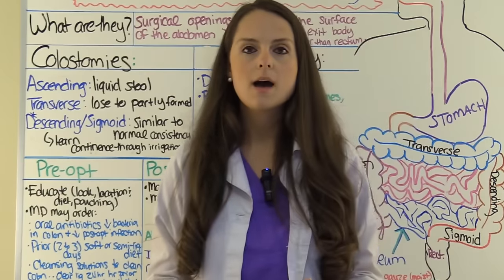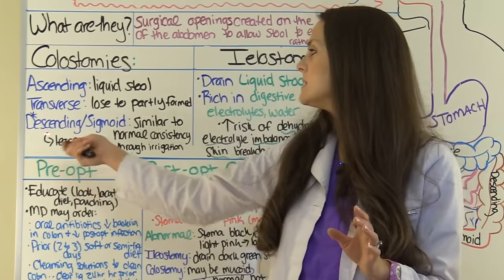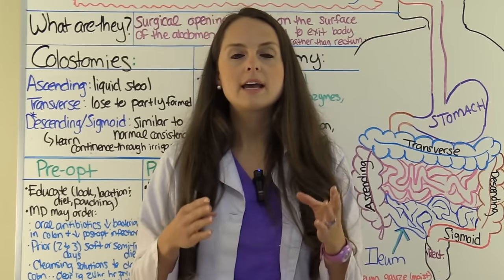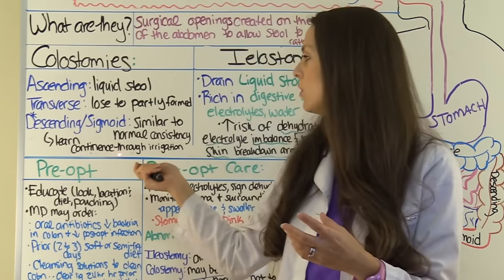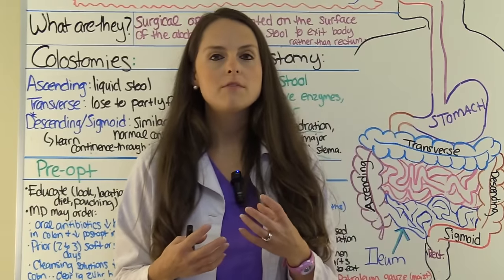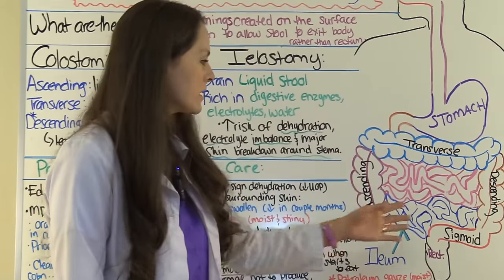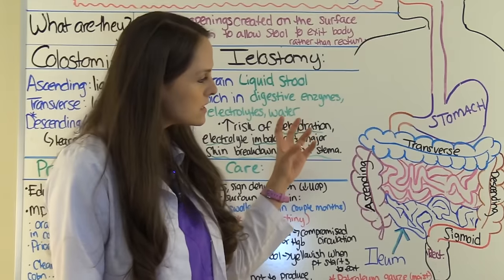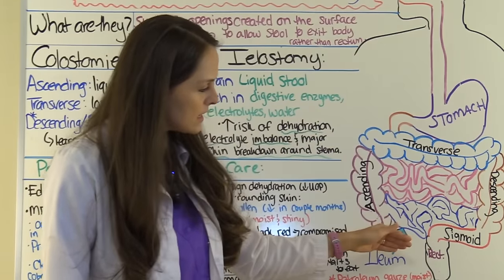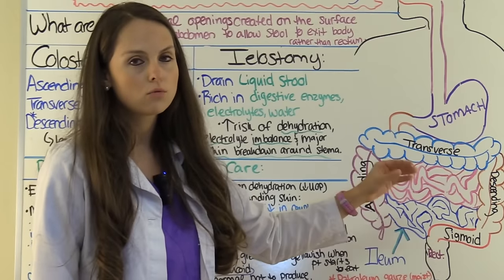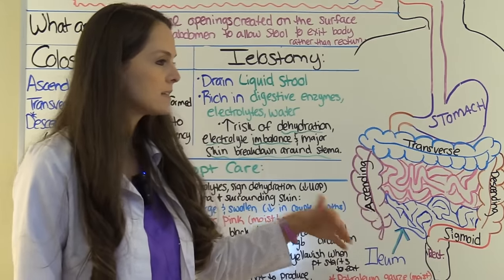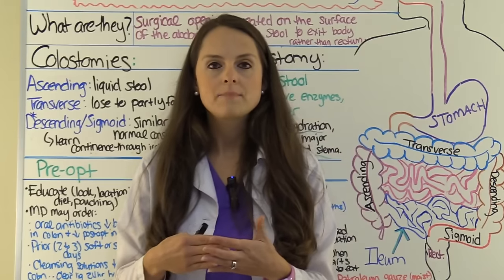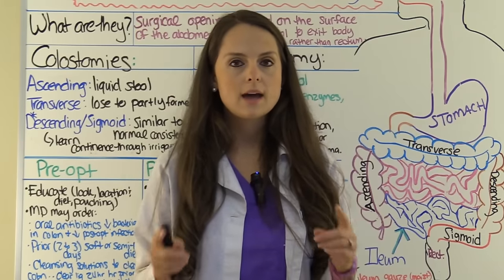Keep this in mind: the descending and sigmoid colostomies give the patient a greater chance of developing bowel continence, where they can learn to control their bowel movements. Why? Because the more distal the colostomy is in the GI tract, the greater the chance of continence. They can learn to do this through irrigation, which is just an enema given through the stoma.